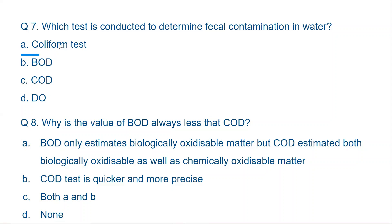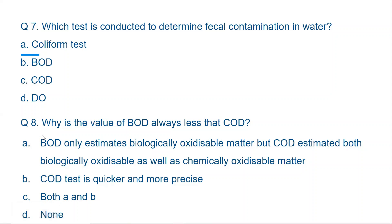Question eight: Why is the value of BOD always less than COD? The correct option is A: BOD only estimates biologically oxidizable matter, but COD estimates both biologically oxidizable as well as chemically oxidizable matter. That is why COD is always greater than BOD.